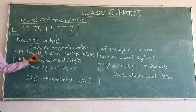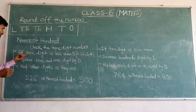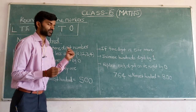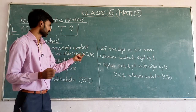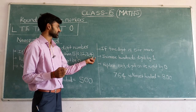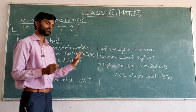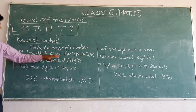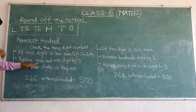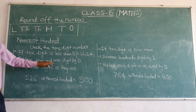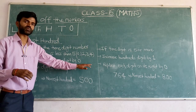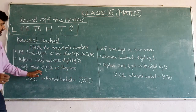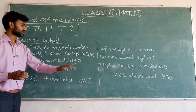The first rule for finding the nearest 100: if the tens digit is less than 5 — meaning 0, 1, 2, 3, or 4 — replace the tens and ones digits by 0 and keep the other digits as they are.